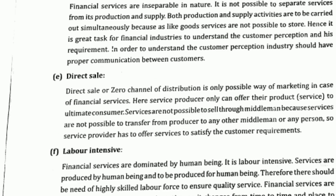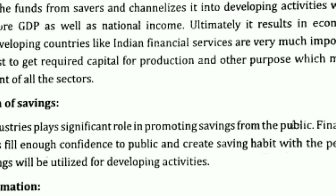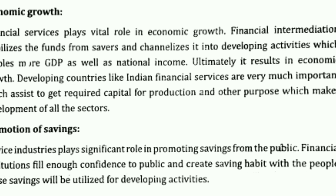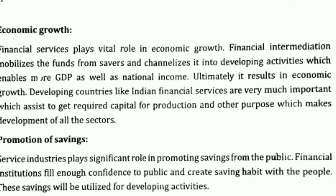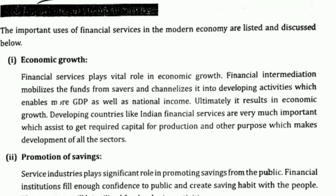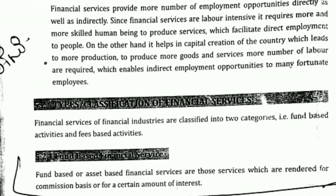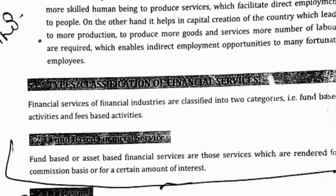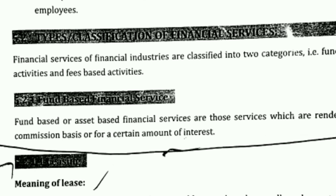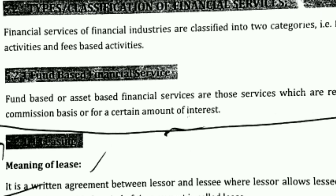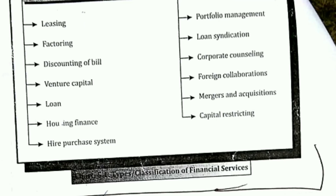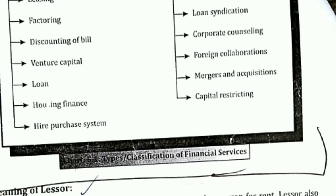There should be production and consumption at the same place. Inseparable — service cannot be separated as goods are separated on quality and quantity basis. Direct sale — production and consumption take place and direct sales take place. Labor intensive — especially a financial service needs a banker who produces and delivers the service at that time only. Heterogeneity — there are many types of services: ATM service, venture capital service, factoring service, leasing service, and many more.